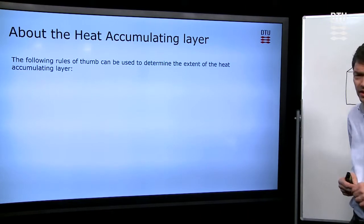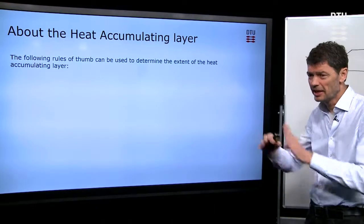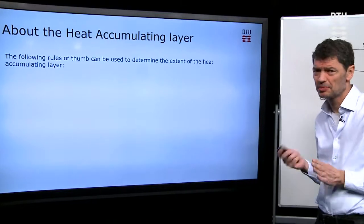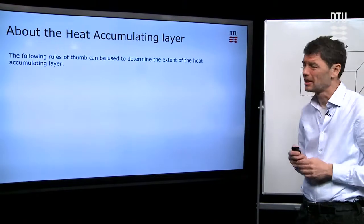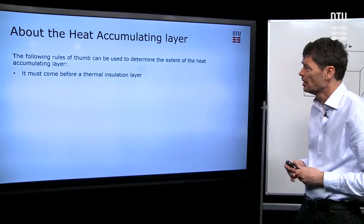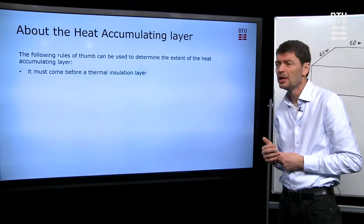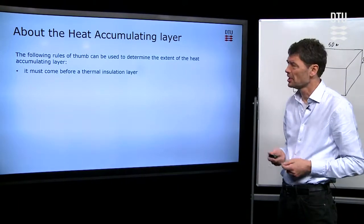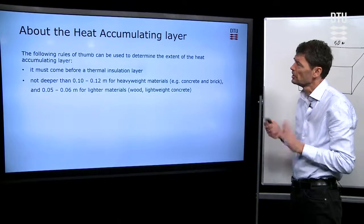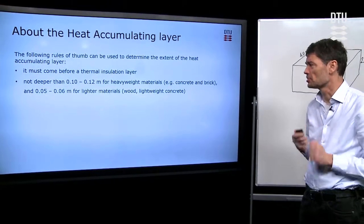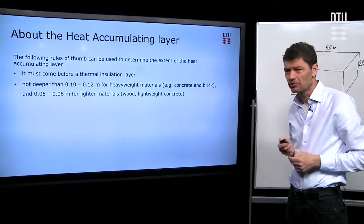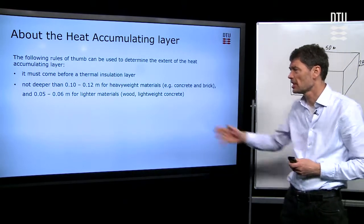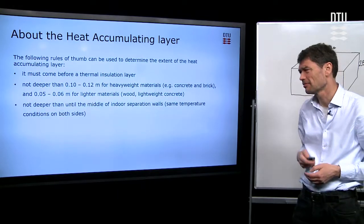I'll just have a few words to say on that heat accumulating layer, so how much material we can consider in our calculation. Because there are a few rules of thumb of how much material really interacts with the air that we have in the room. If you have a multi-layered structure, then we should consider only the layers that come before possibly also an insulation layer. Also, normally, if we have heavyweight, normally building materials, we don't see thicknesses larger than around 10 to 12 centimeters. Also, depending on how well-conducting the materials are. For some lighter materials, we'll probably see slightly less, five to six centimeters.